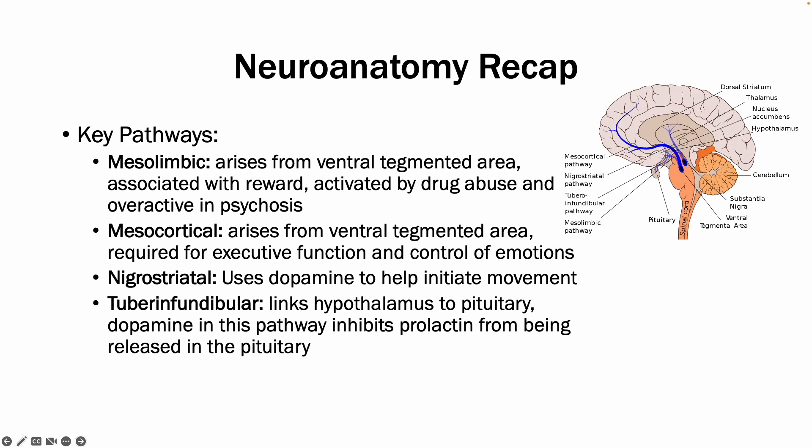The tuberoinfundibular pathway links the hypothalamus to the pituitary, and dopamine in this pathway inhibits prolactin from being released in the pituitary. So again, by blocking dopamine, you have increased prolactin, which can cause hyperprolactinemia.